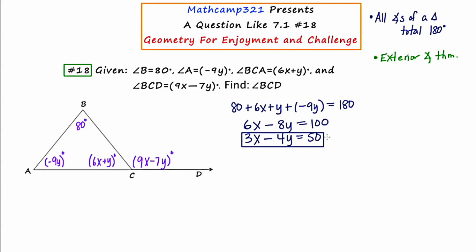More specifically in this diagram, it would say that 9x minus 7y is equal to 80 minus 9y. Cleaning this up to make it look like the same format as the other one in blue, I'm going to add 9y to both sides and say 9x plus 2y is equal to 80.